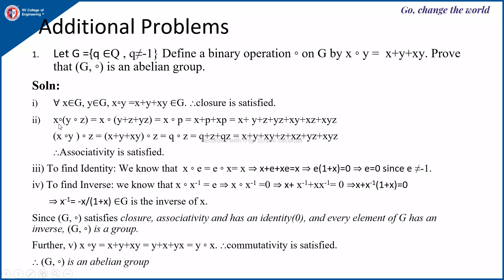For associativity: x∘(y∘z) = x∘(y+z+yz). Letting P = y+z+yz, this gives x∘P = x + P + xP. Similarly, (x∘y)∘z: letting Q = x+y+xy, we get Q∘z = Q + z + Qz. Expanding both sides yields the same expression, so associativity is satisfied.